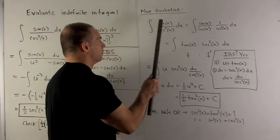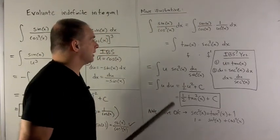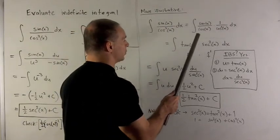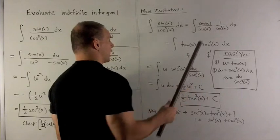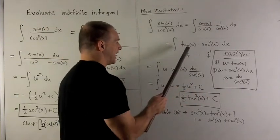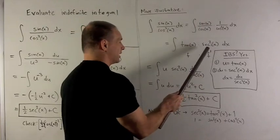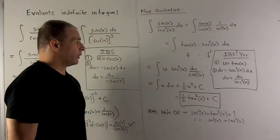If I'm really into trig functions, I can notice immediately that I can break this thing up into sine x over cosine x and 1 over cosine squared of x. The first one is just tangent, second one is secant squared of x dx.